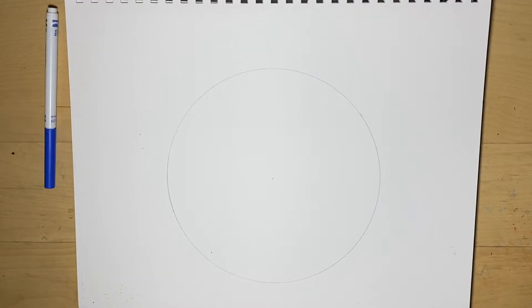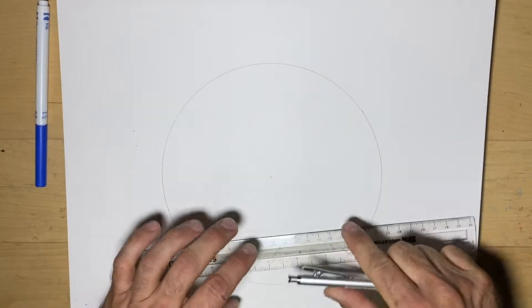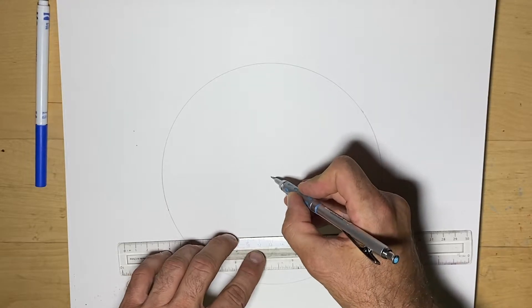Next, we're going to draw the diameter and cut it in half or bisect it, and then we're going to cut it in half again.